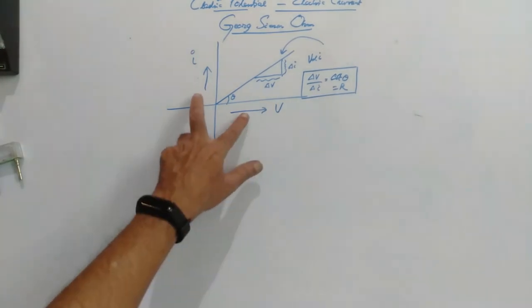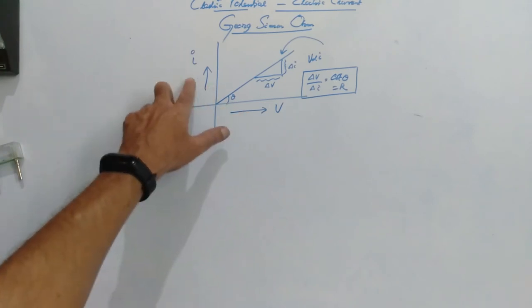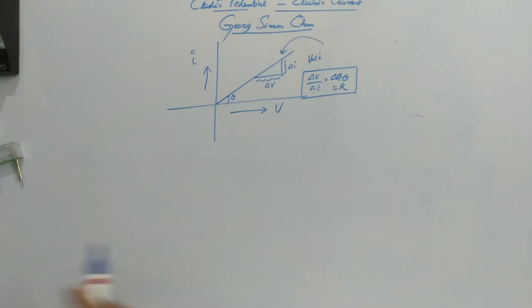If you change the quantities, potential on this and current on this, you will get tan theta as resistance.